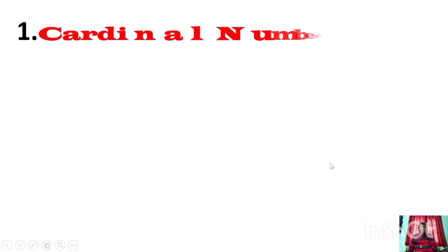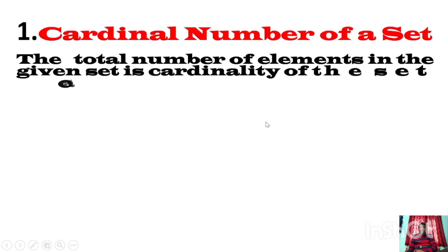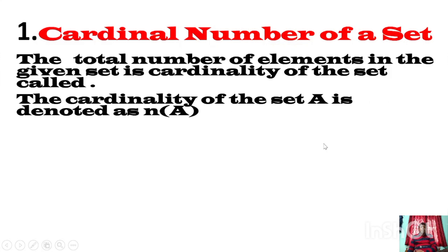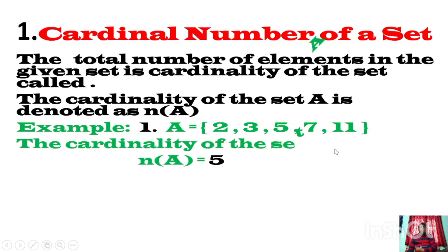Let us see the first point: the cardinal number of a set. The total number of elements in a given set is known as the cardinality of the set. The cardinality of set A is denoted by N of A. For example, if set A contains the elements 2, 3, 5, 7, 11, then the total number of elements, N of A, is equal to 5. The number of elements a set contains is known as the cardinality of the set.